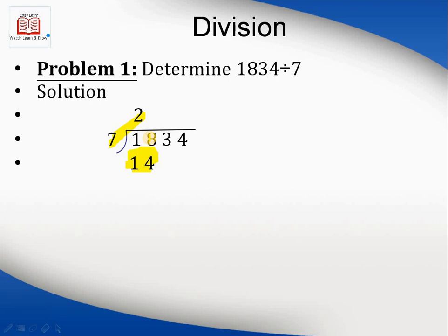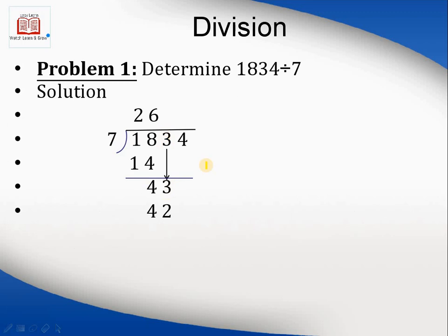Subtracting 14 from 18, the answer is 4. This 4 is again less than 7, so we bring down the next digit — 3 — combining with 4 to make 43. Now 43 is greater than 7. 7×6=42 and 7×7=49, which is greater than 43, so we use 42. Subtracting 42 from 43 gives a remainder of 1.